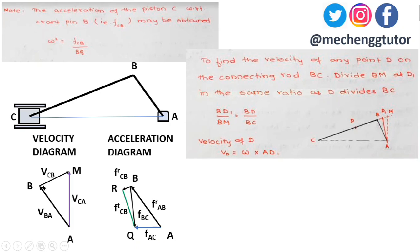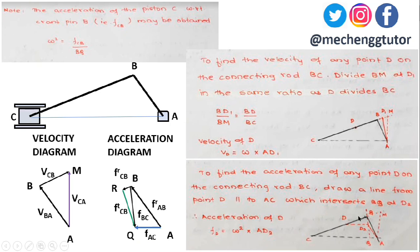To find the velocity of any point D on the connecting rod: divide BM in the same ratio in which point D divides the connecting rod BC. This gives similar triangles, so BD1 / BM = BD / BC. The velocity of point D is then given as vD = omega × AD1, where AD1 is the length measured from the construction.